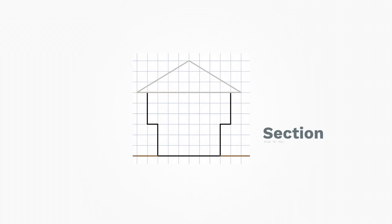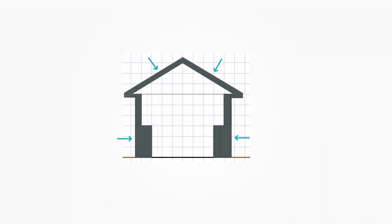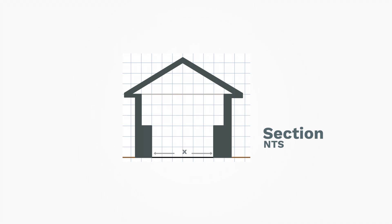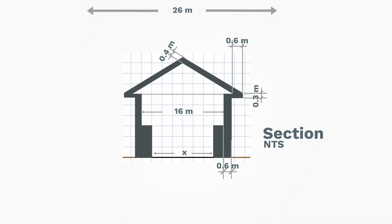This is a section view of the house the architect is designing. This section is not to scale. As we know from the problem, the architect used all the allowable buildable area on the second floor. However, there is no information given about the ground floor, so we will leave it as variable x. We will now apply the firewall requirements into this section, and the rest of the computation is straightforward. As you can recall, we have a lot width of 26 meters, and after putting the setback, we're left with a 16-meter width.